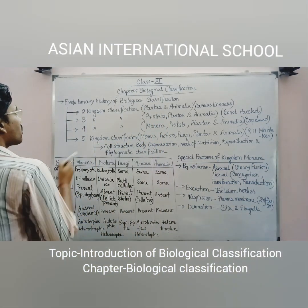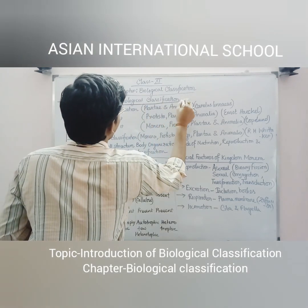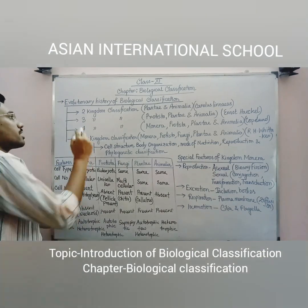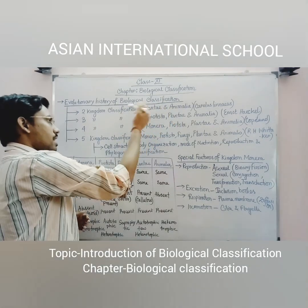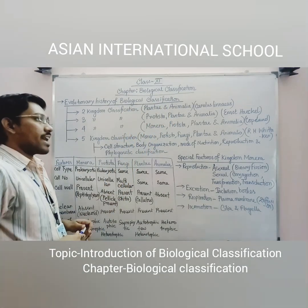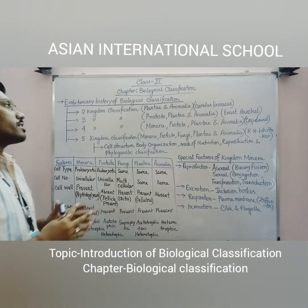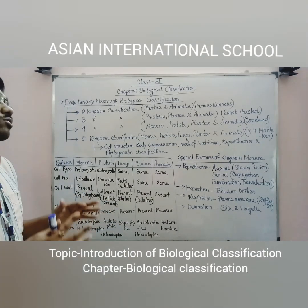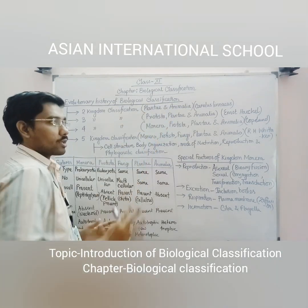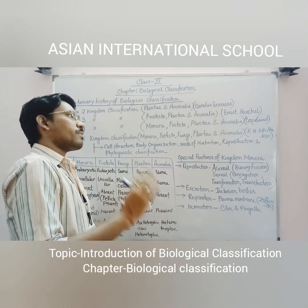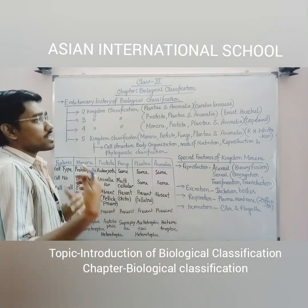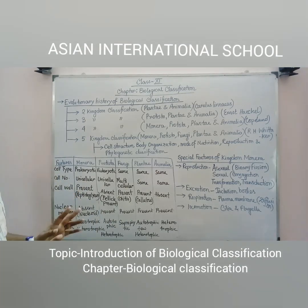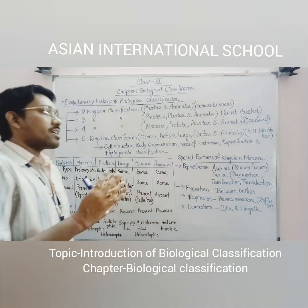Let's discuss the evolutionary history of biological classification. The first concept after the three domain concept is the two kingdom classification, proposed by Carolus Linnaeus. He classified all organisms into two kingdoms — Plantae and Animalia — because he had no knowledge of microorganisms. This was based on mode of nutrition and presence or absence of cell wall.